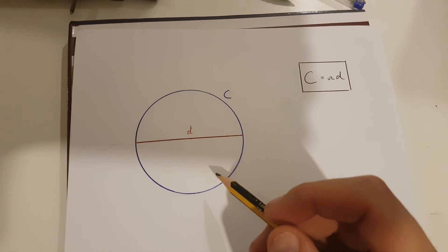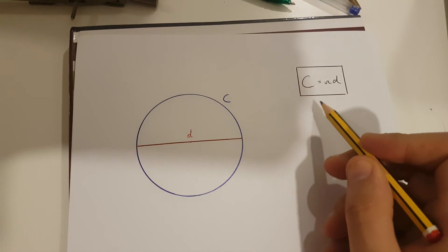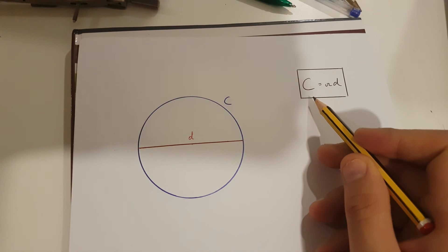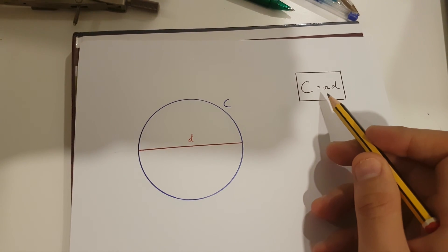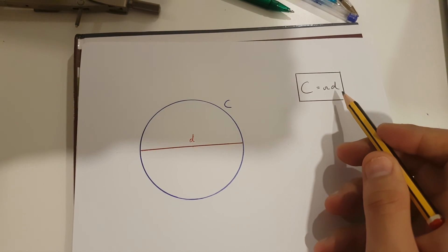Hi, in this video, I'll be showing you why the circumference of a circle is equal to pi times diameter.